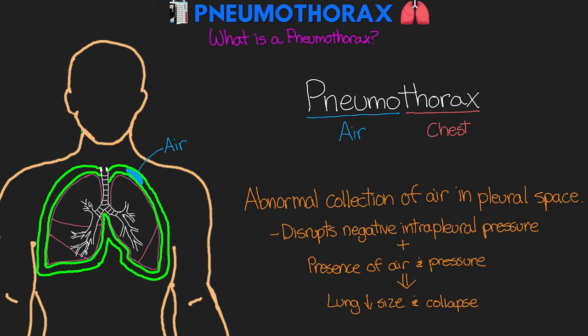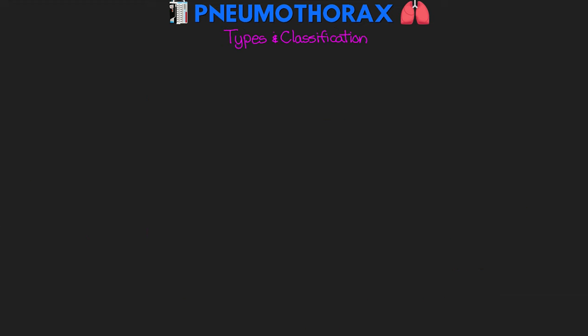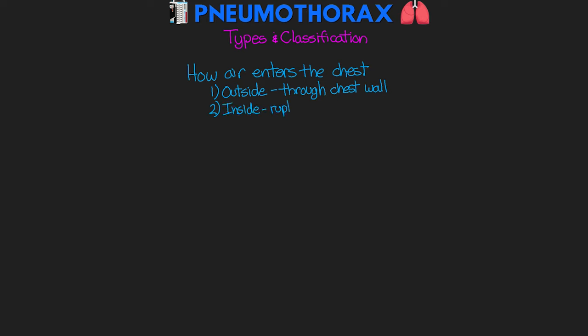Disrupting this negative pressure, as well as the presence of air taking up space and putting pressure on the lung, can actually lead to the lung decreasing in size and collapsing. The degree of this collapsing is really what leads to the clinical presentations that we see in our patients. Obviously, a collapsed lung is not going to be able to exchange gas very well. Air can enter the chest one of two ways: from the outside through the chest wall because of some trauma, or from the rupture of lung tissue and visceral pleura.